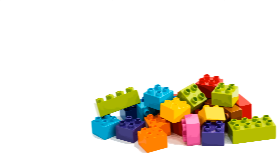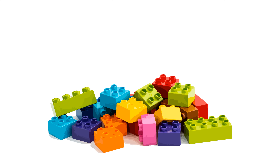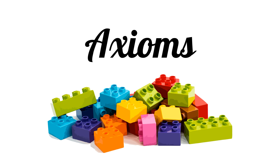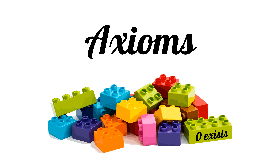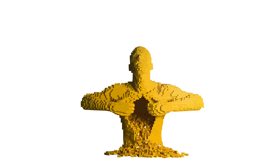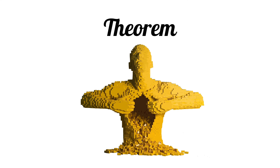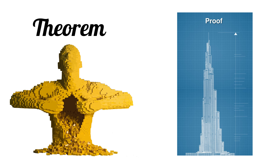A math system is like a Lego set. There are a base set of bricks called axioms that define the system. These axioms can be anything we want, even things that have no basis in reality, but typically we try to make sure they make sense intuitively, such as the number zero exists. We can then take these axioms, put them together, rearrange them, and ultimately build an incredible structure. These structures are called theorems, and the blueprint of how to lay each brick on top of another is the proof.